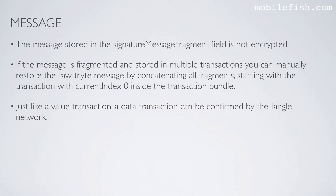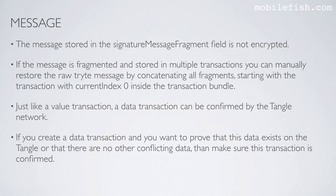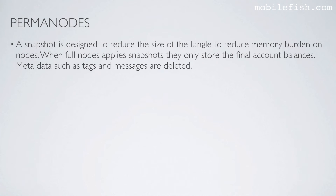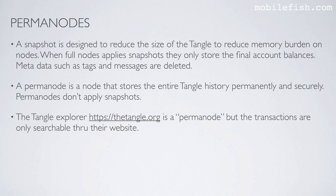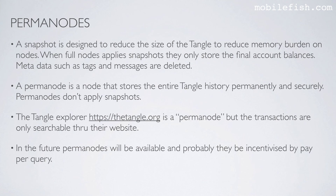Just like a value transaction, a data transaction can be confirmed by the Tangle network. If you create a data transaction and you want to prove that this data exists on the Tangle, or that there are no other conflicting data, then make sure this transaction is confirmed. A snapshot is designed to reduce the size of the Tangle to reduce memory burden on nodes. When full nodes apply snapshots, they only store the final account balances — metadata such as tags and messages are deleted. A perma node is a node that stores the entire Tangle history permanently and securely; permanodes don't apply snapshots. The Tangle Explorer tangle.org is a perma node, but the transactions are only searchable through their website. In the future, perma nodes will be available and probably incentivized by pay per query.